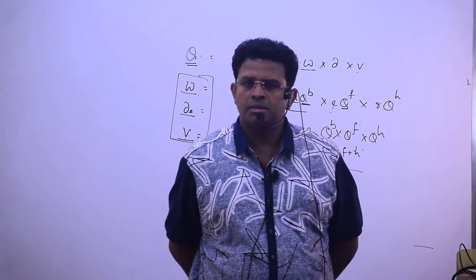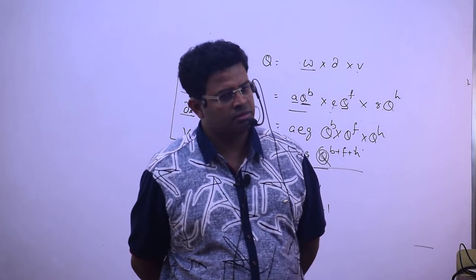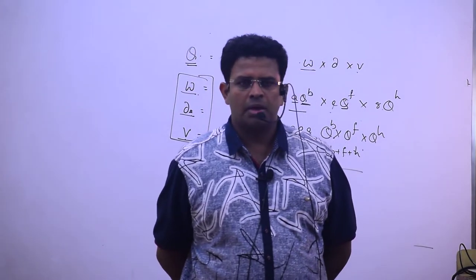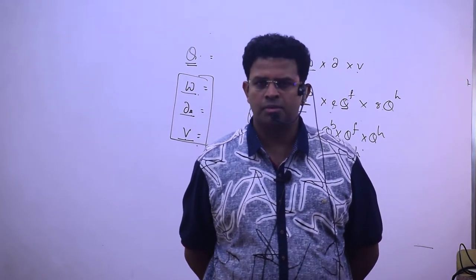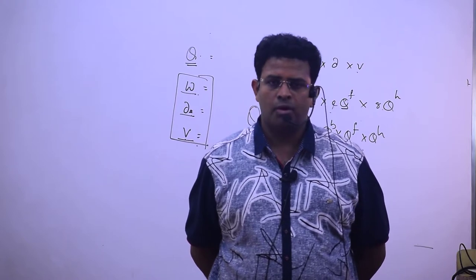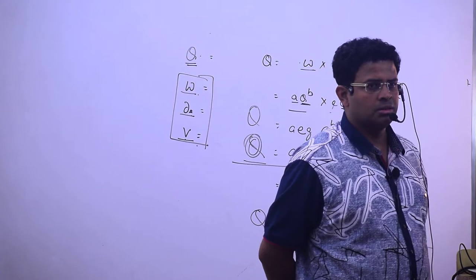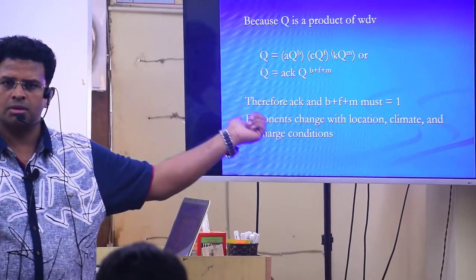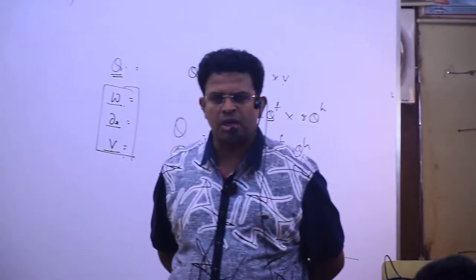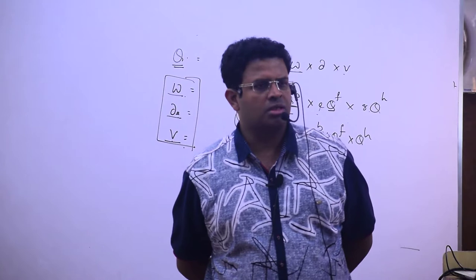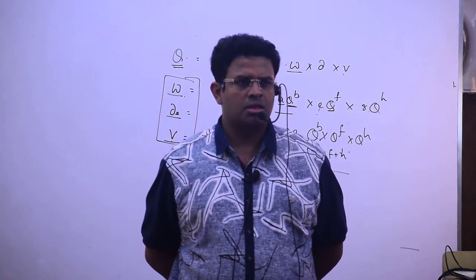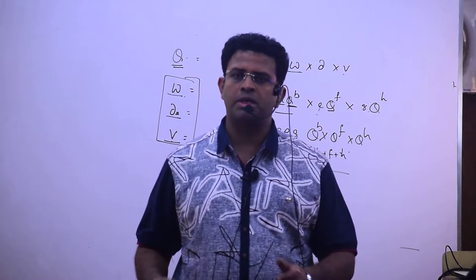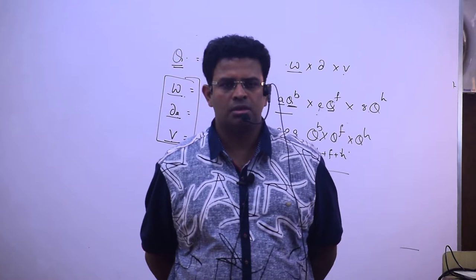We analyze the channel geometry — bankfull depth, average depth, width, depth, and velocity of a river. At any point, with respect to the quantity of discharge, these variables are affected by the quantity of discharge, climate, and location. Width, depth, and velocity are variables associated with some coefficient and exponent, and are directly proportional to the quantity of discharge.